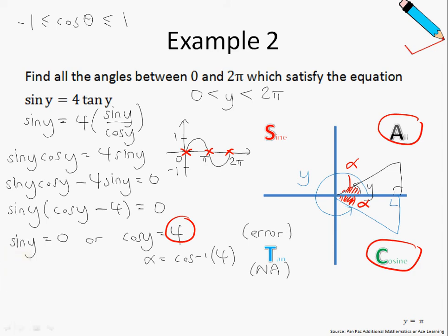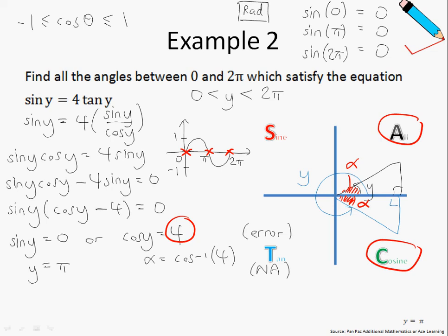For those still unsure, you can press sine 0, sine π, and sine 2π in your calculator and you'll get 0 for all — just make sure your calculator is in radian mode. There are three possible answers (0, π, and 2π), but due to the range of y, we only take y = π. So the final answer is y = π.